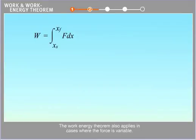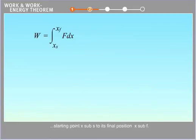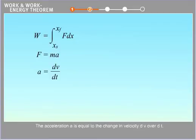The work energy theorem also applies in cases where the force is variable. In this case, the work done on an object is obtained by integrating the force along the object's path from its starting point x sub s to its final position x sub f. We know from Newton's second law that f equals ma. The acceleration a is equal to the change in velocity dv over dt.